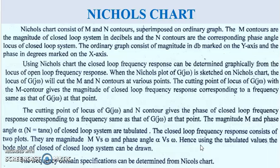In this video we are going to see a concept known as Nichols chart. In control systems, especially in the frequency domain, we have a number of graphical methods which are used to predict the stability of the system, and Nichols chart is one of them. Nichols chart basically consists of M and N contours that are superimposed on the ordinary graph. So first we need to know what these M and N contours are.